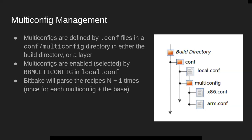One of the nice things about multi-config is that it doesn't have to be in your build directory — it can also live inside of a layer. So if this were your top-level directory of your layer, you'd have your conf directory, and instead of local.conf, this would be layer.conf, and under there you'd have your multi-config. So you can package up multi-config and ship them with a layer, which is really convenient for a lot of use cases.